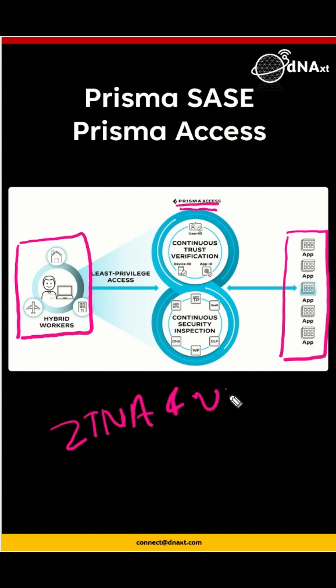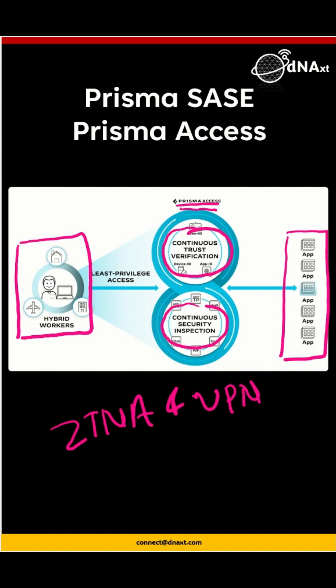Prisma Access replaces your legacy VPN with direct-to-app connectivity, with least privileged access and continuous trust verification. These are the two key things. Being cloud-native allows Prisma Access to be highly scalable, always available, and enables a reduction in the attack surface.